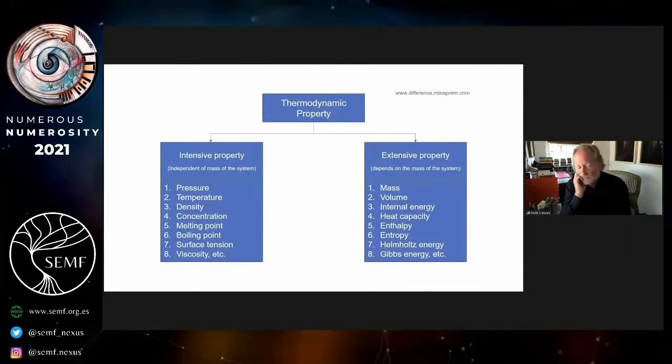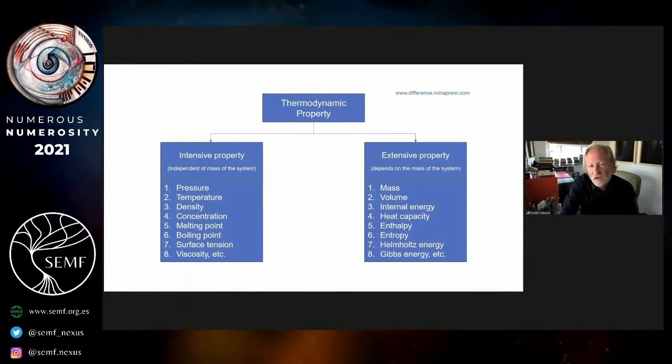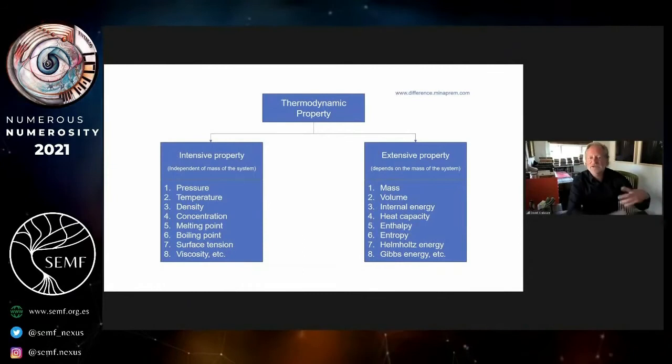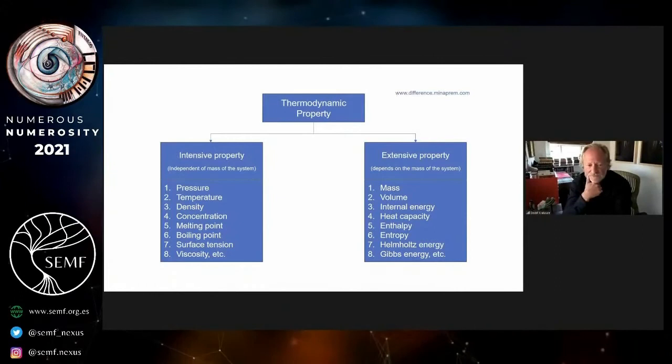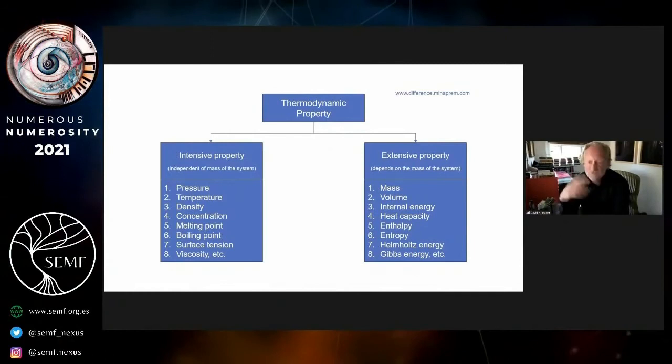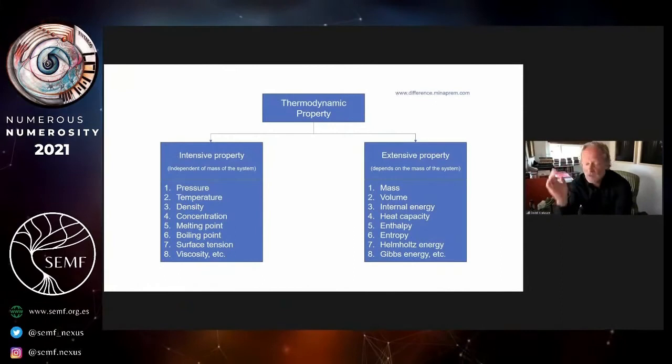One useful way of pointing out what's been going on in all of these examples comes from a metaphor with thermodynamics. In thermodynamics, we think about intensive properties—pressure, density, the boiling point, melting point—and all of these are independent of the scale of the system, of its mass. You don't change the boiling point of water by having more water, right?